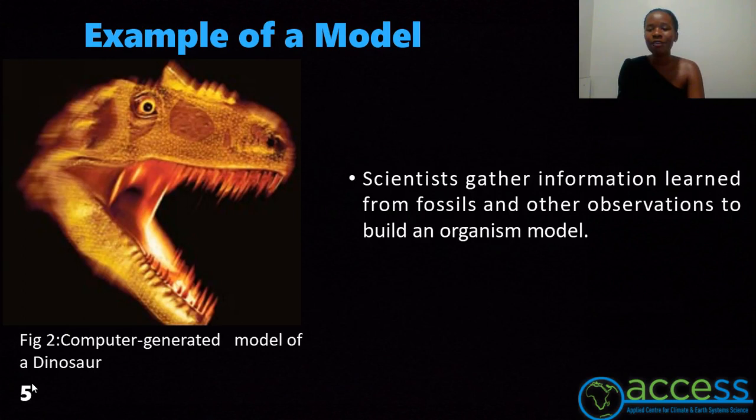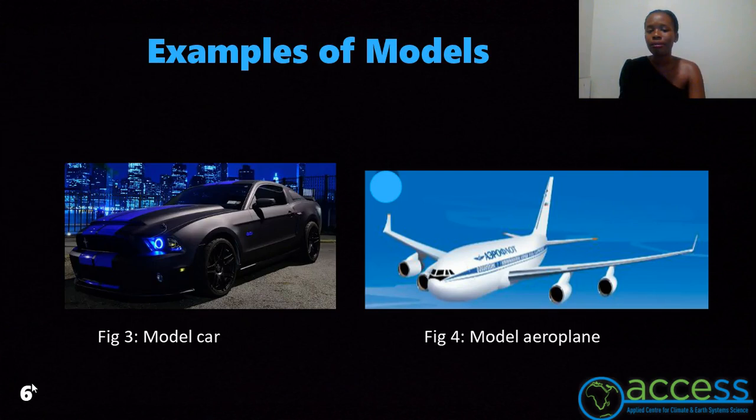Still can't visualize it? Here is an example of a model — in figure two, which is a computer-generated model of a dinosaur. Science uses scattered information learned from fossils and other observations in order to come up with this type of model. Other examples of models are shown in figure three and figure four: figure three is a model car and figure four is a model airplane.